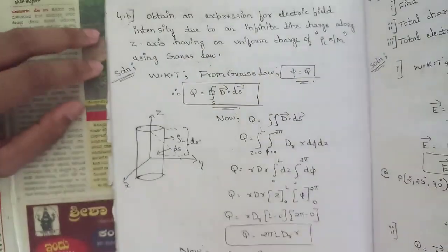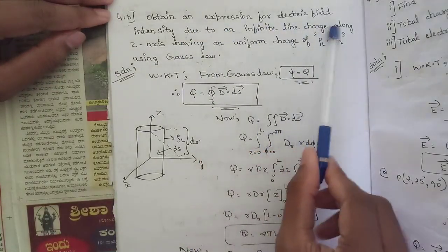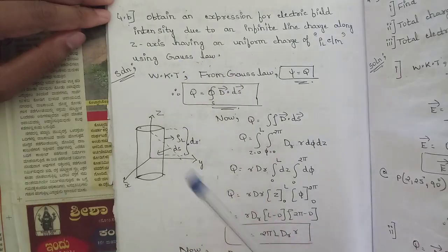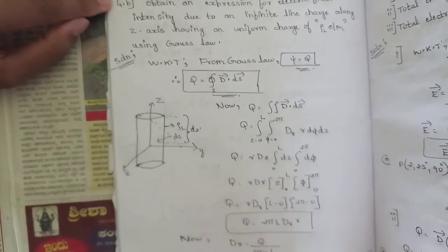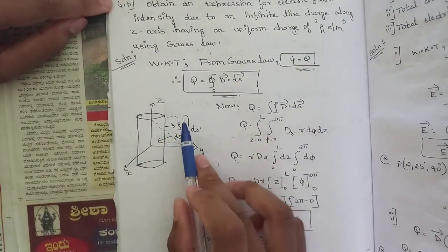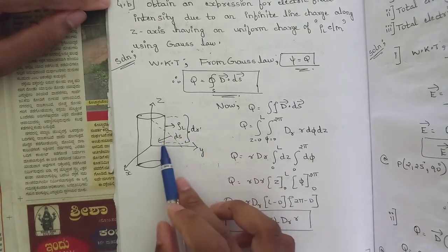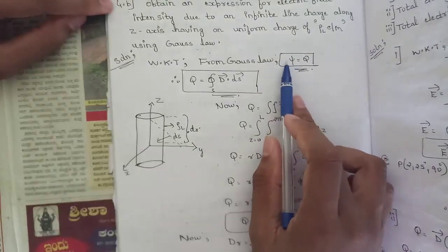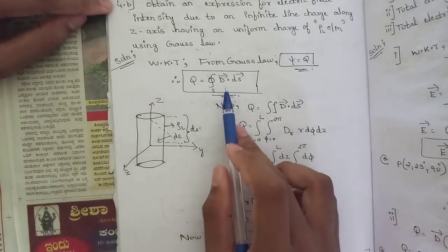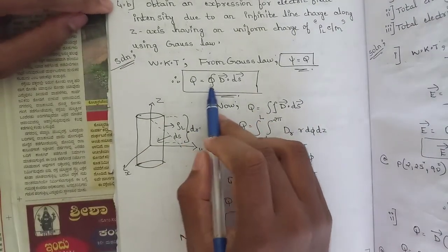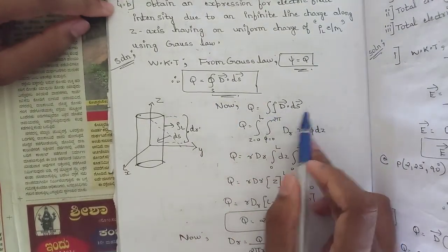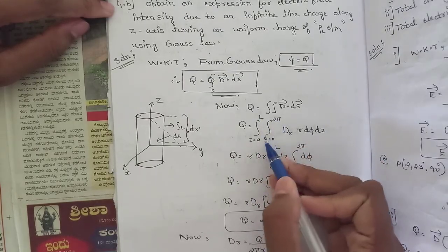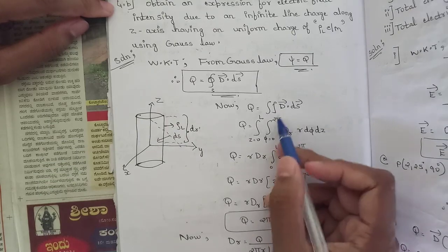The next question asks to obtain an expression for electric field intensity due to an infinite line charge along the z-axis with uniform charge density ρl coulombs per meter, using Gauss's law. We draw a cylindrical Gaussian surface with the z-axis and use ψ = Q, where ψ = surface integral of D·dS. Substituting limits: z from 0 to L, φ from 0 to 2π.